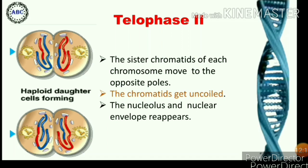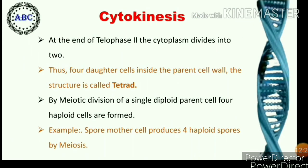The nucleolus and nuclear envelope reappear. After this karyokinesis, cytokinesis takes place at the end of telophase second. The cytoplasm of each of the two cells of a dyad divides into two, and as a result, one parent cell produces four haploid daughter cells after completion of the two meiotic divisions. Thus, four daughter cells inside the parent cell wall form the structure called a tetrad — four haploid cells formed by meiotic division of a single diploid cell.